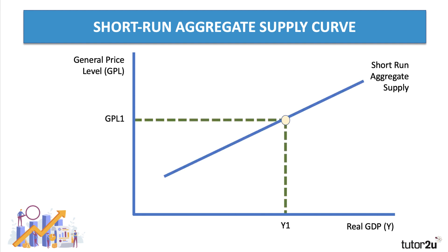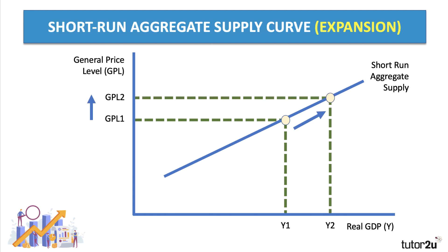The short-run aggregate supply curve is upward sloping, indicating a positive relationship between the general price level and national output. The gradient of the short-run aggregate supply curve depends on the extent to which there is spare capacity in the economy. Typically, when unemployment is high and capital is underutilized, aggregate supply will tend to be elastic because there's plenty of spare productive capacity that can be brought into use when aggregate demand increases.